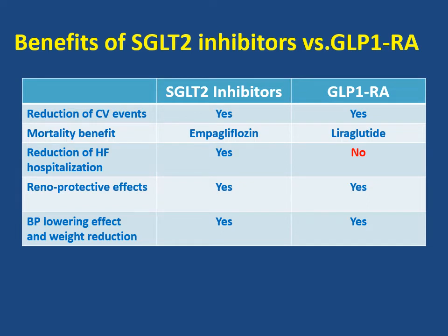What are the benefits of SGLT2 inhibitors versus GLP-1 receptor agonists? SGLT2 inhibitors can reduce cardiovascular events, have renal protective effects, blood pressure lowering effect, and weight reduction effect. The mortality benefit is observed mainly with empagliflozin among SGLT2 inhibitors and liraglutide among GLP-1 receptor agonists. The major difference between SGLT2 inhibitors and GLP-1 receptor agonists is the reduction of heart failure hospitalization: there is evidence of this reduction with SGLT2 inhibitors, while this is not observed with GLP-1 receptor agonists.